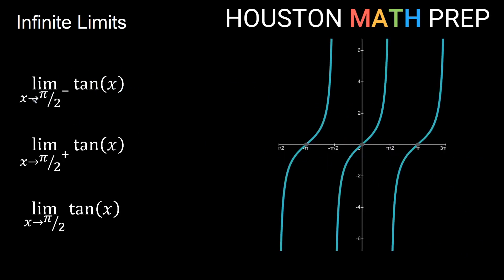Looking at the graph of tangent x, as x approaches π/2 from the negative direction, we have a vertical asymptote at π/2, just like we had on 1/x and 1/x². Approaching from the left side, we're on the branch to the left of π/2, and that is approaching a positive infinite value. If we approach x equals π/2 from the positive side, from the right of this asymptote, we would be on that branch approaching from the right, and we would actually be going down — negative infinity for that limit.